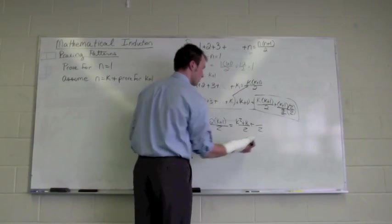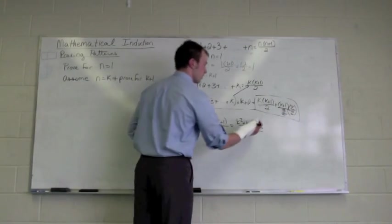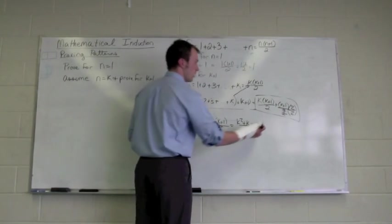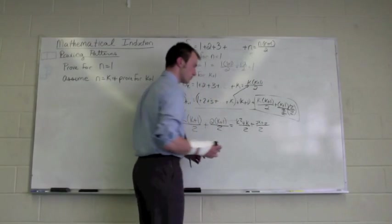Again, this is all over 2, this is also all over 2, 2 times k, or 2k, plus 2 times the 1, for 2.